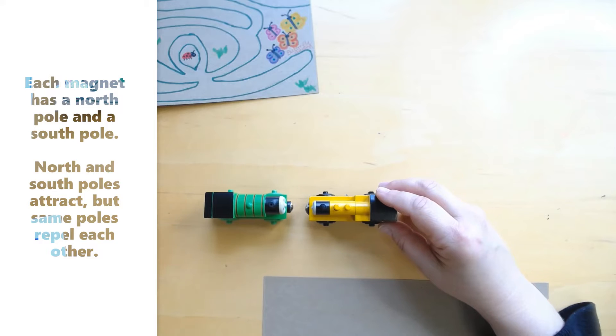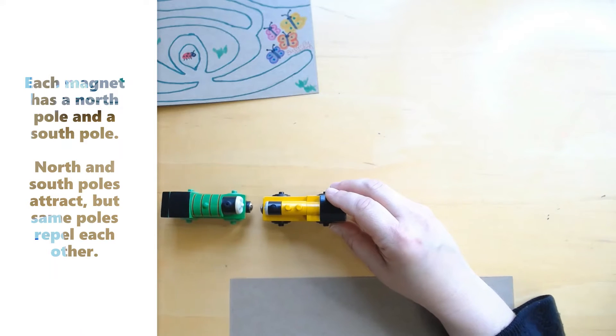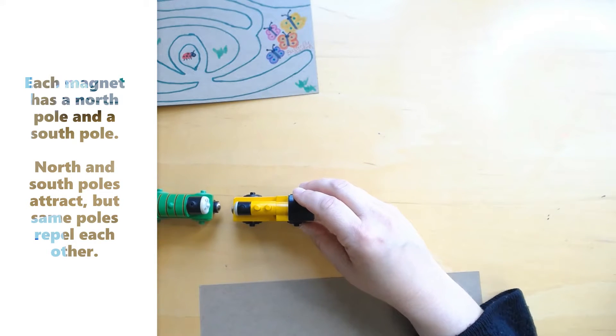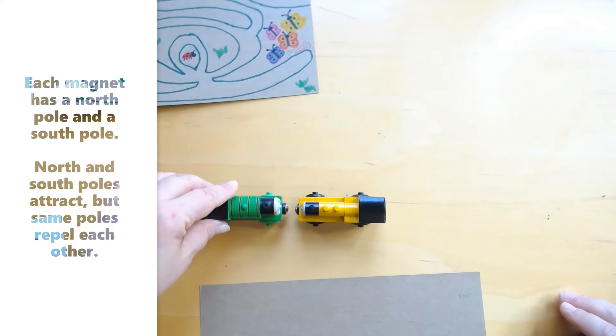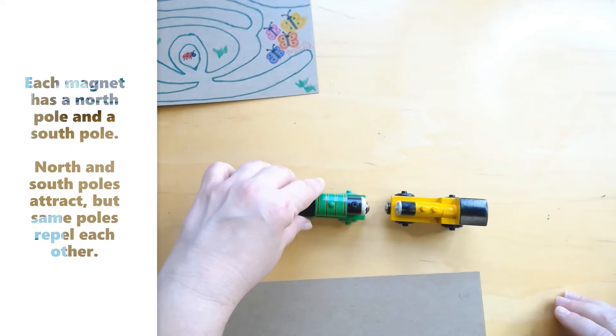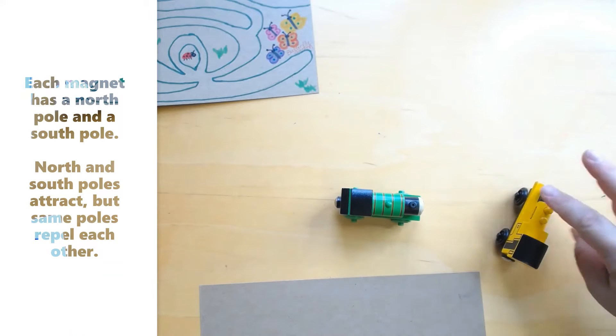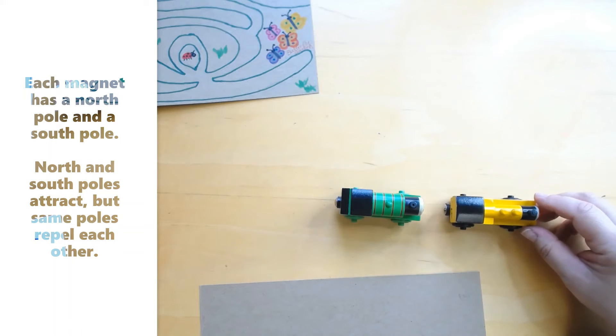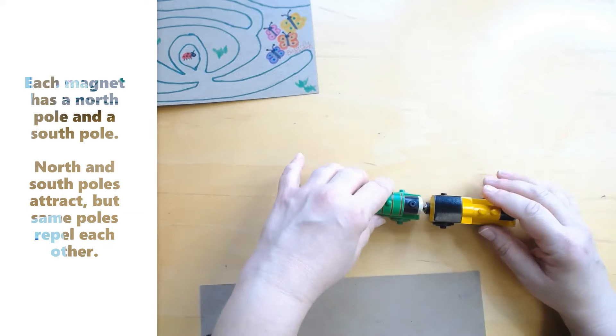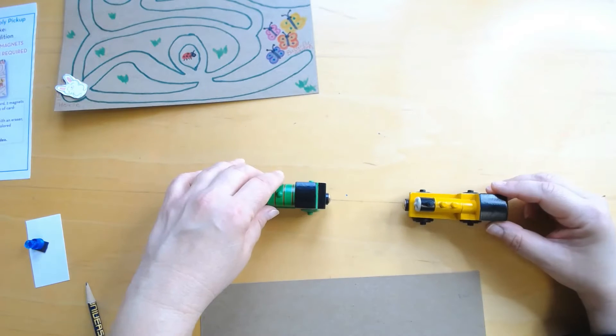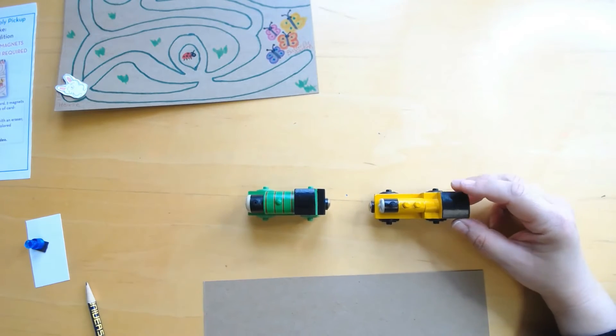Magnetic field is repelling Percy and Percy's magnetic field is repelling Duncan. If Duncan turns around it attracts. If they both turn around what do you think will happen?